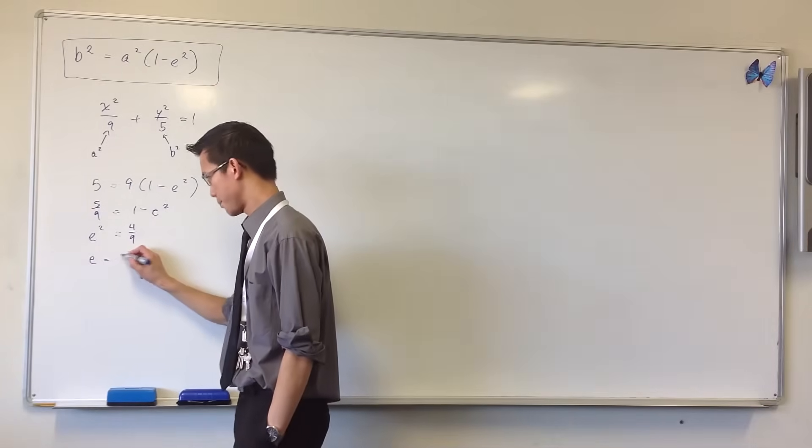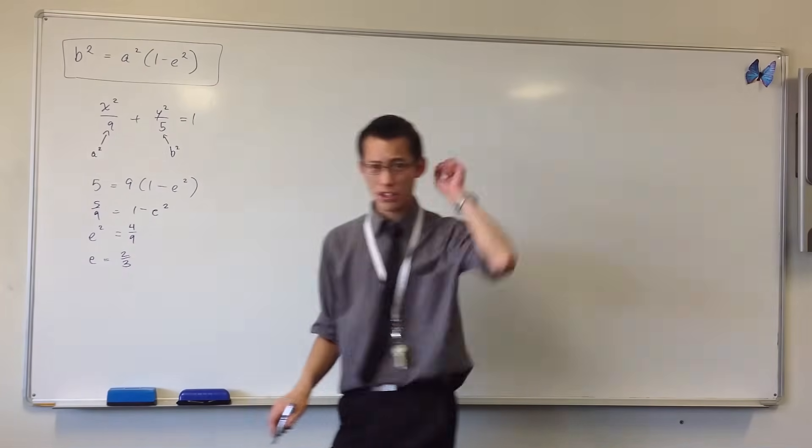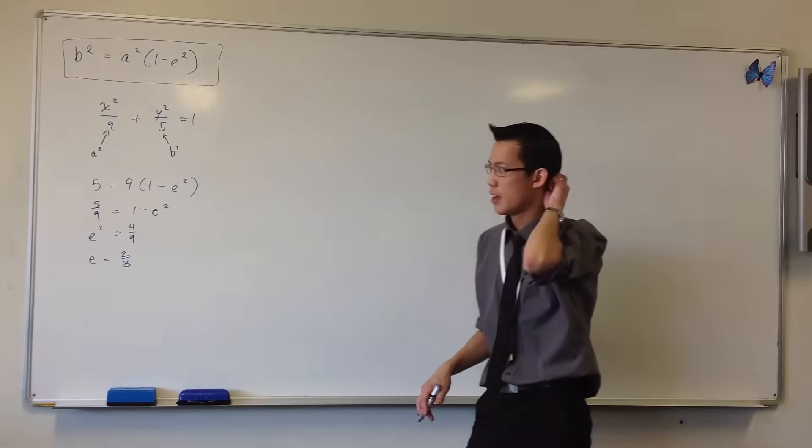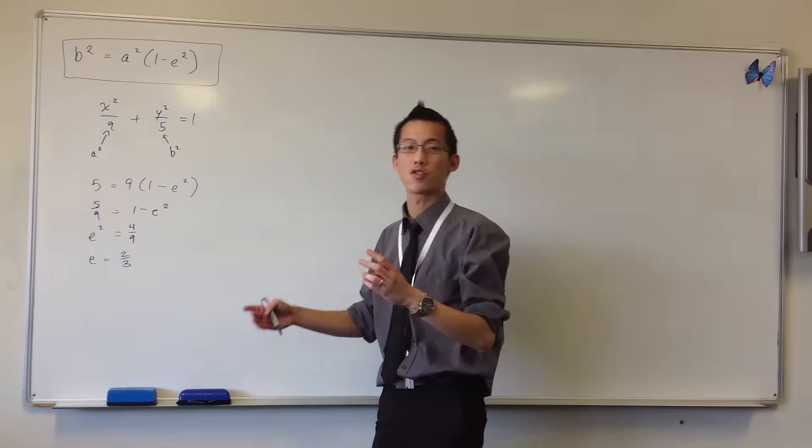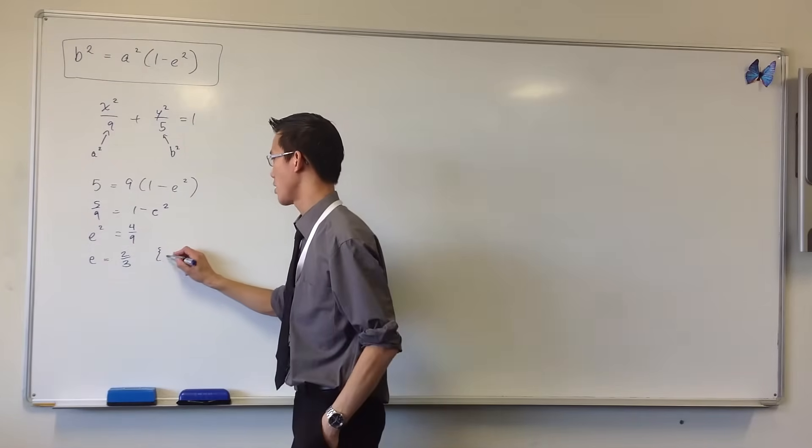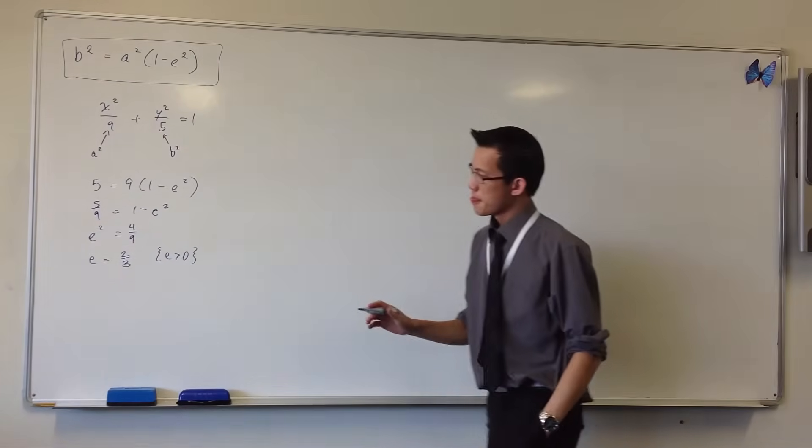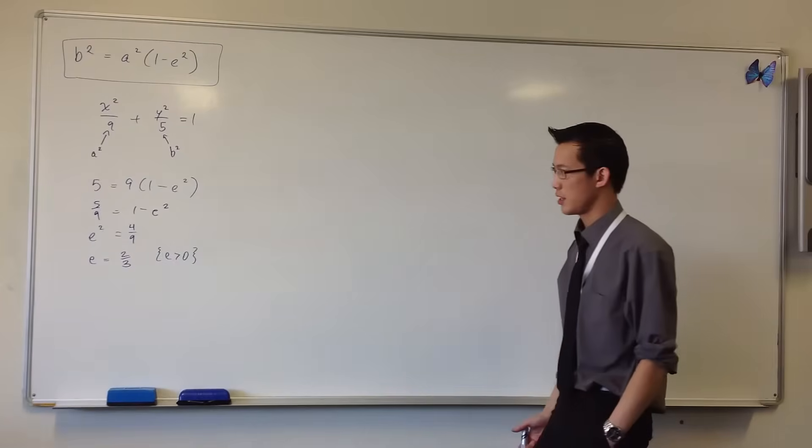And now you can take the square root. Now we are only going to take just the one value, the positive one, because remember what eccentricity is. It's a ratio. Therefore it's positive. So there you go, that's eccentricity, e equals 2/3.